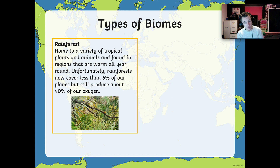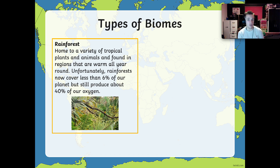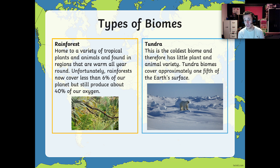Now we've got rainforests. They are home to a variety of tropical plants and animals and are found in regions that are warm all year round. Unfortunately, rainforests now cover less than 6% of our planet but still produce about 40% of our oxygen. Rainforests get cut down quite a lot, and one of the things we'll look at later in the unit is how the Amazon rainforest has been cut down for its resources. And then we have the tundra — this is the coldest biome and therefore has little plant or animal variety. Very few animals can survive here. Tundra biomes cover approximately one-fifth of the Earth's surface.